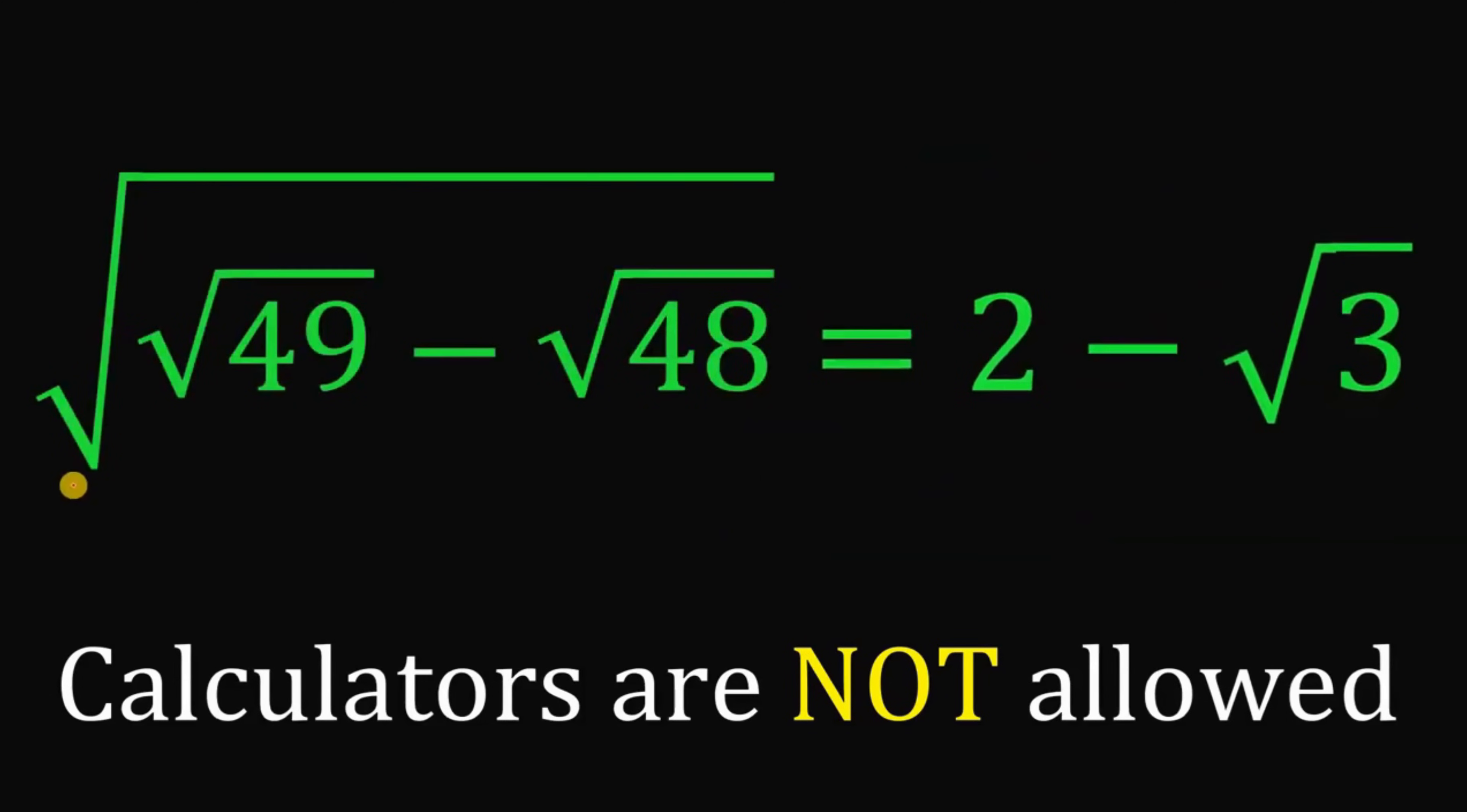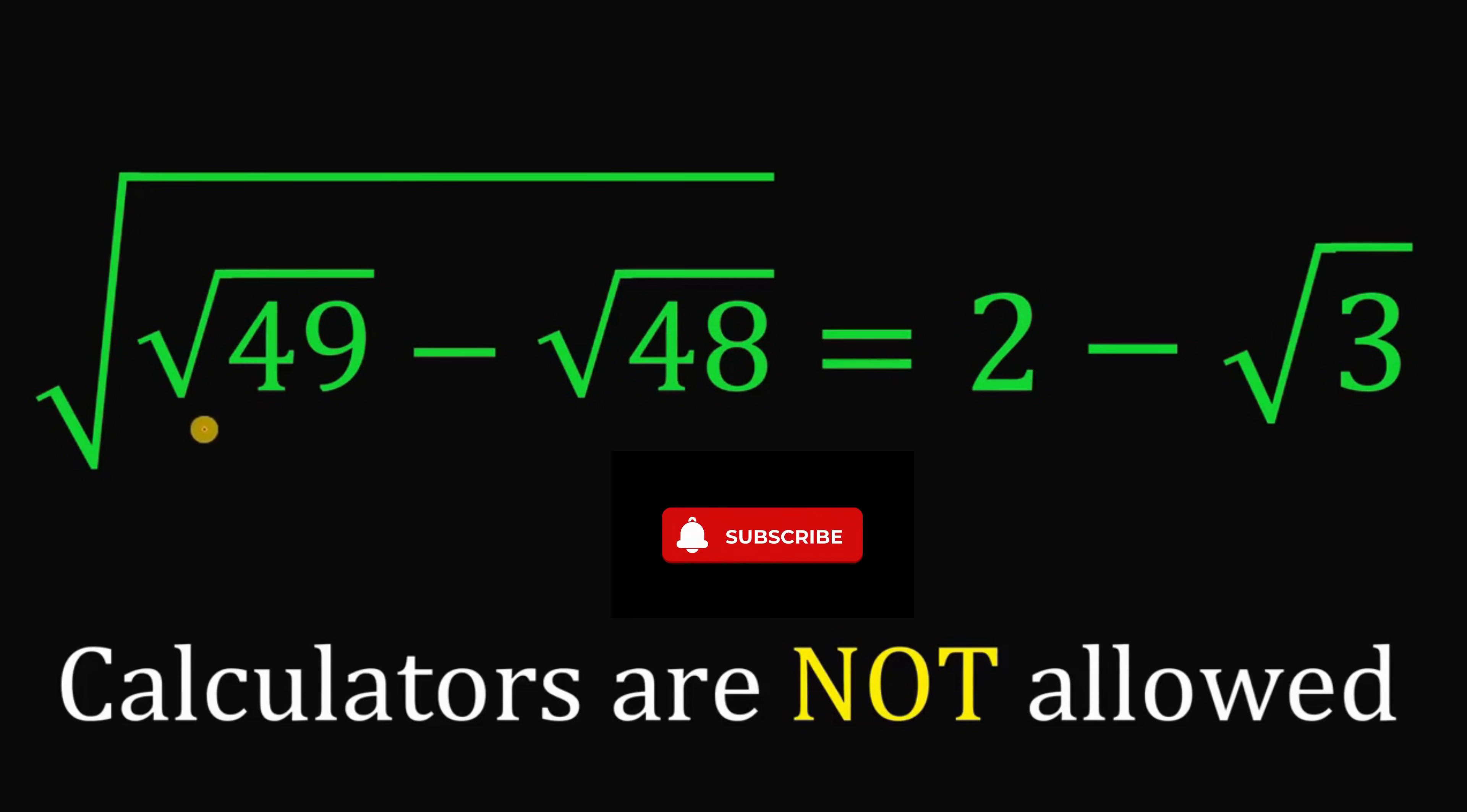Therefore, without using any calculator, simplify square root of square root of 49 minus square root of 48, and our answer is just 2 minus square root of 3. And as always, we are done.